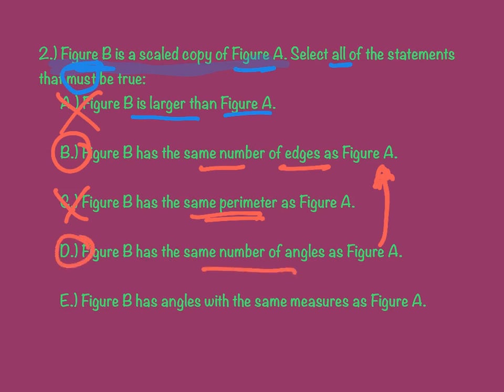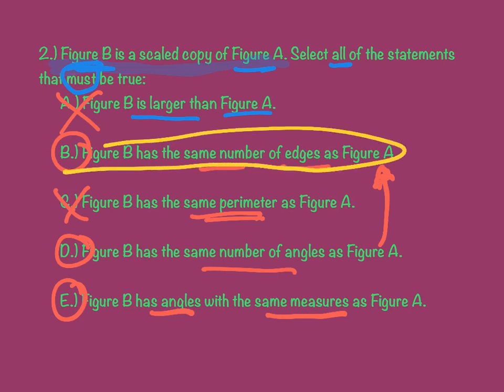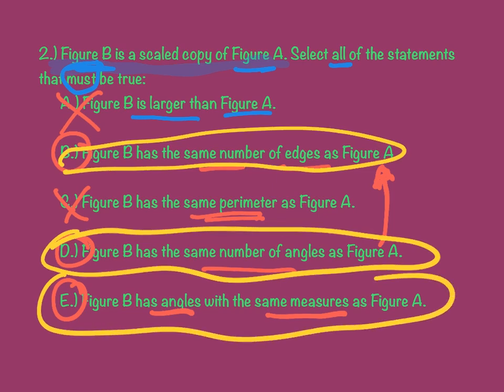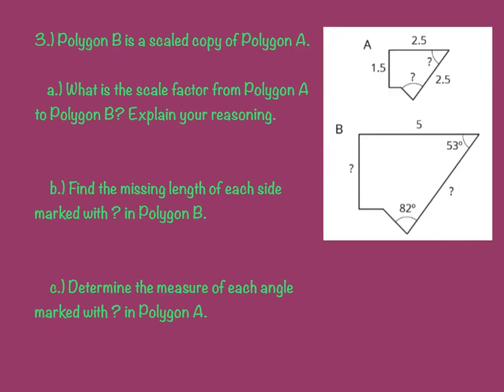Figure B has angles with the same measures. And if you remember the exercise that we did when we used the tracing paper over the railroad signs, that was proven that we'll always have the same angles. So, we have B is always true, D is always true, and E is always true. So, okay,